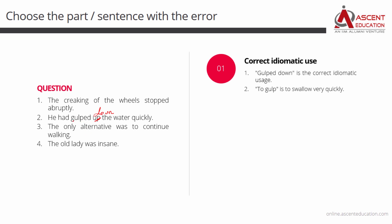The error is not in option two's usage alone. We will look at options three and four. The only alternative was to continue walking. If you want to check the word 'only,' we will check and confirm it is used correctly — only one way to do it, we will walk. Meaning is correct. The answer option is not the error.